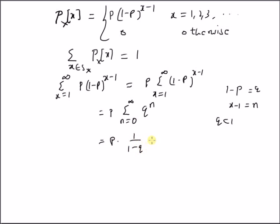Since 1 minus q equals p, we have p times 1 over p, which equals 1. Therefore, the summation from x equals 1 to infinity of p times (1-p) to the power x minus 1 equals 1.